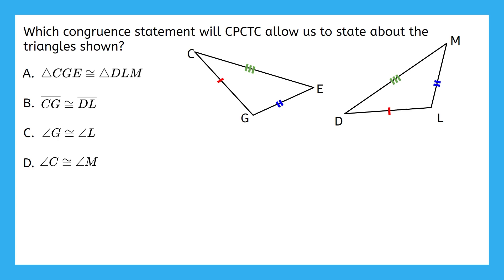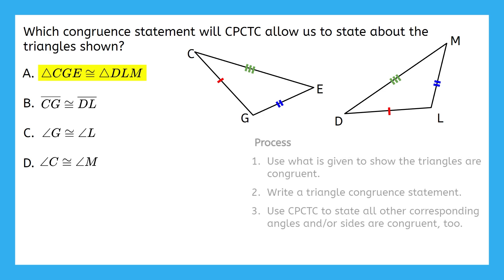Okay, let's go through these answer choices one at a time. The first says that triangle CGE is congruent to triangle DLM. Remember the process I showed you earlier? Well, this statement is created in step 2, before we get to use CPCTC, so that cannot be the right answer.